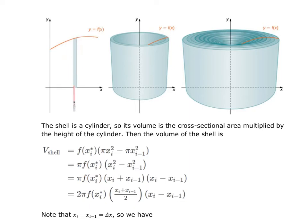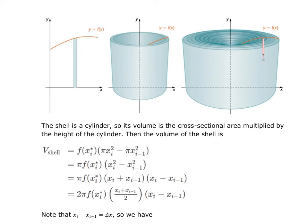Each particular rectangle has some width delta x, and the height is determined by the function. What we've made is a shell — it's not a disk because it's not solid. All of these shells nest inside each other, and they're all based on the number of cuts that we had.